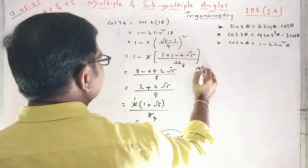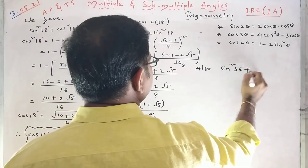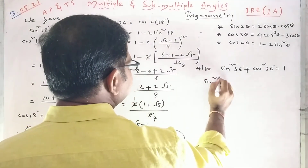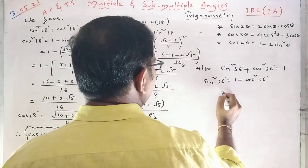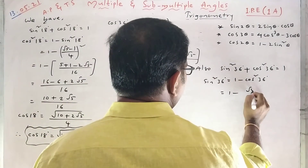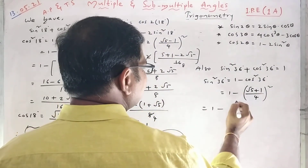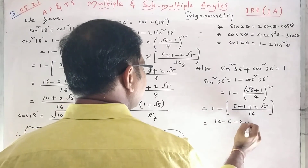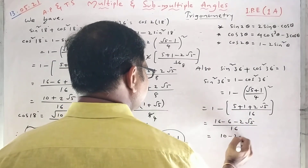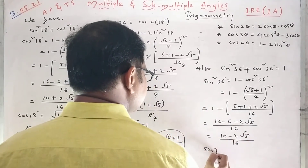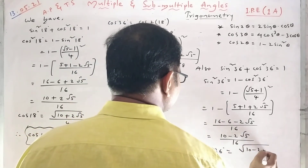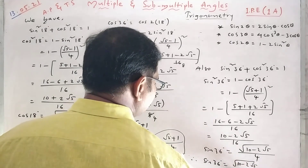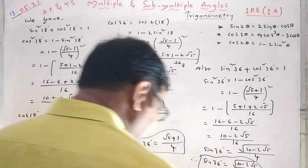From cos 36 we can derive sin 36 using the identity sin² 36 + cos² 36 = 1. So sin² 36 = 1 − cos² 36 = 1 − ((√5 + 1)/4)². Expanding (a + b)²: 1 − (6 + 2√5)/16 = (16 − 6 − 2√5)/16 = (10 − 2√5)/16. Therefore, sin 36 degrees = √(10 − 2√5) / 4.